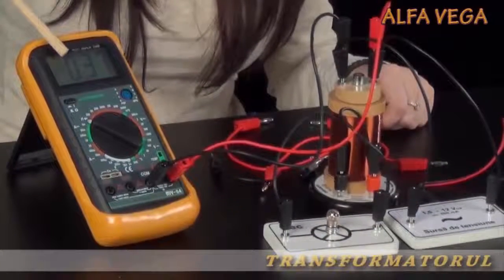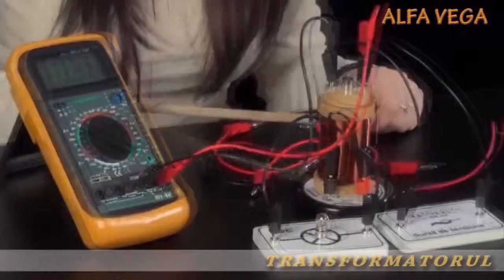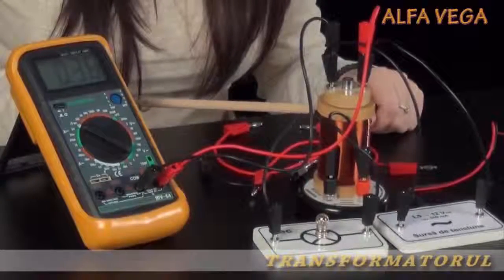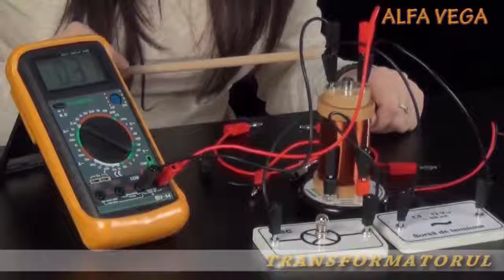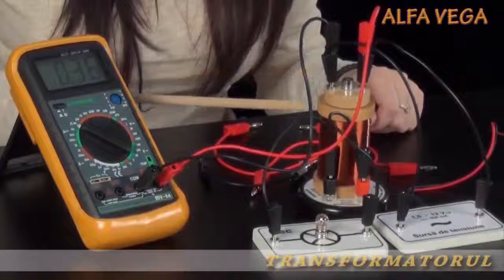Deci tensiunea la bornele sale este de circa 3,5V. Se urmărește numărul de spire de la cele două bobine: 80, respectiv 800 de spire.